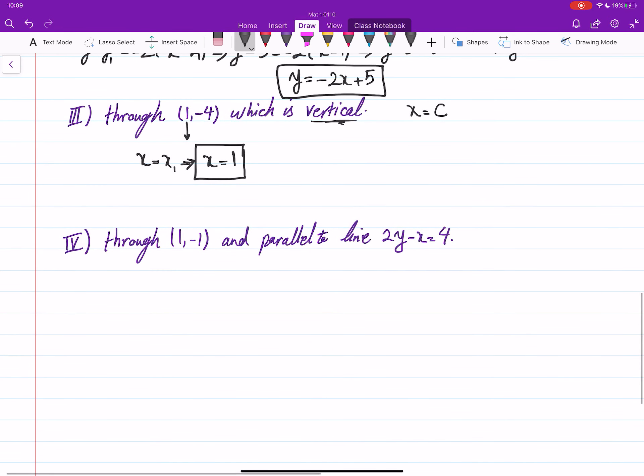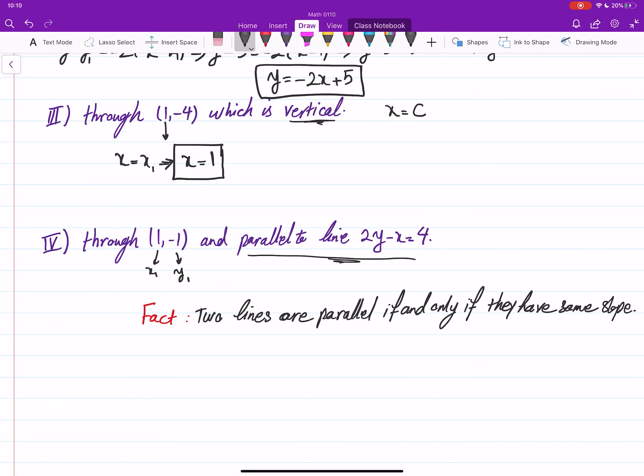How about this one, parallel? The point is given, x₁ and y₁. How about the slope? Slope is not here. Instead, it says that it is parallel to this line. So this is a fact that you have to know: two lines are parallel if and only if they have same slope.